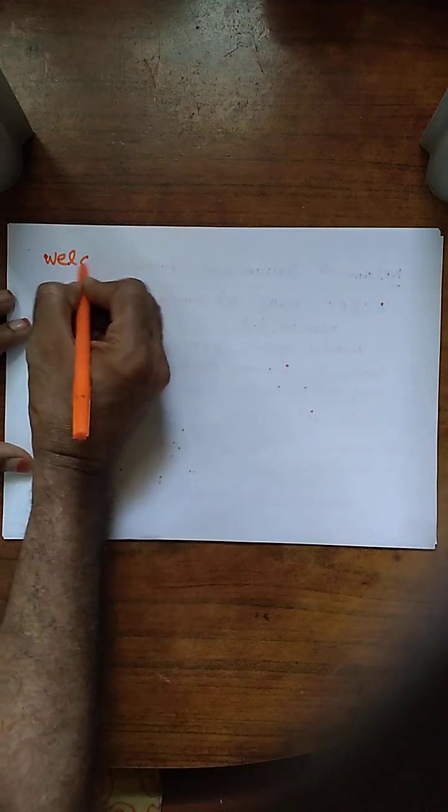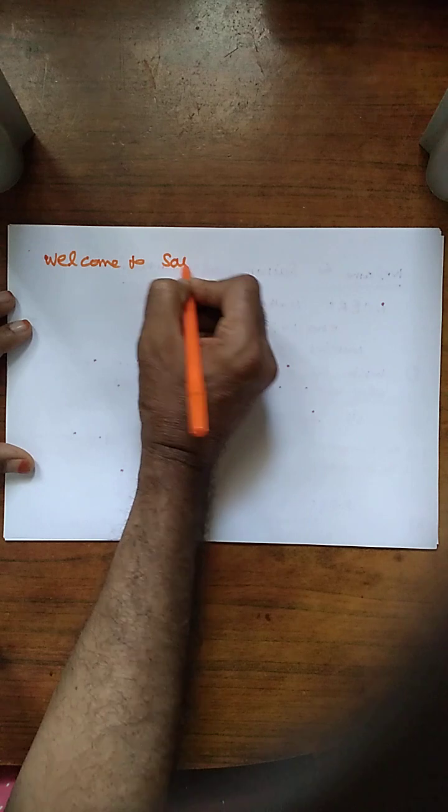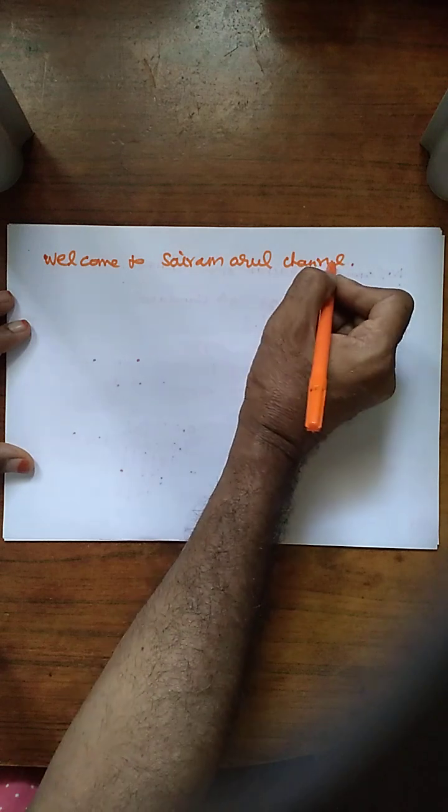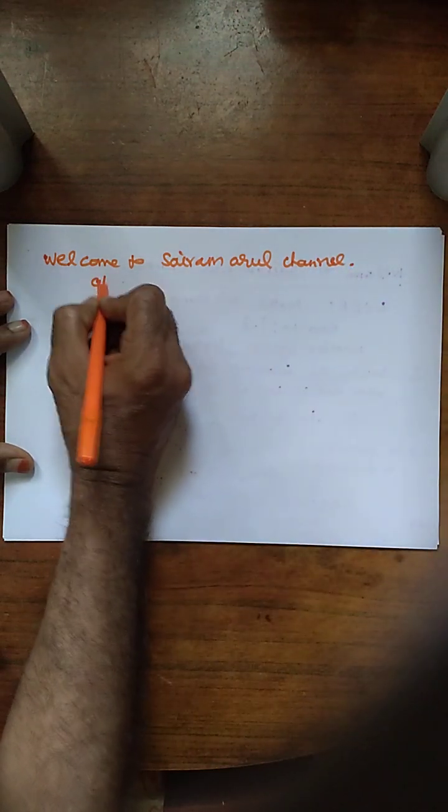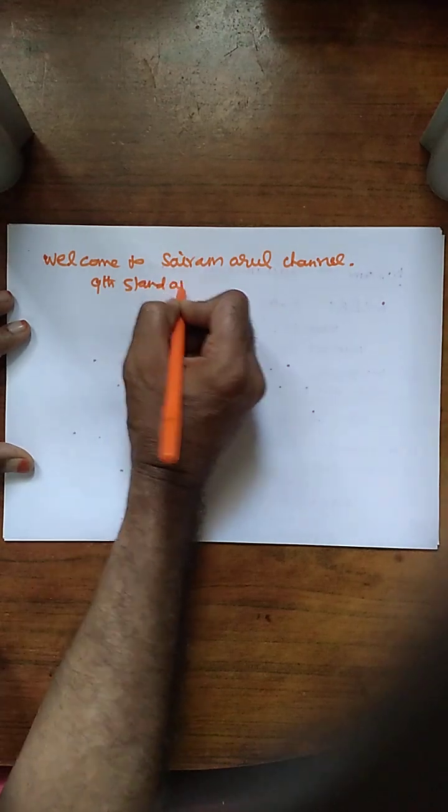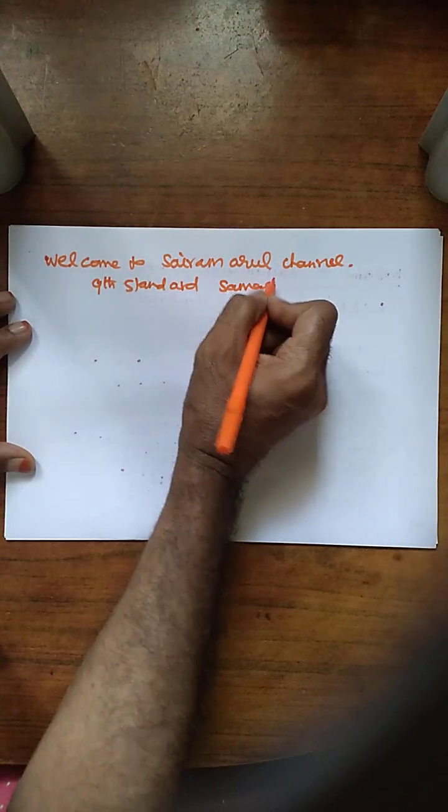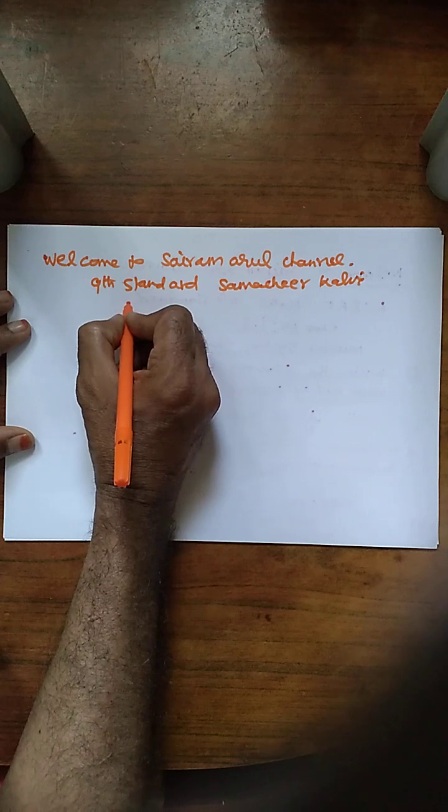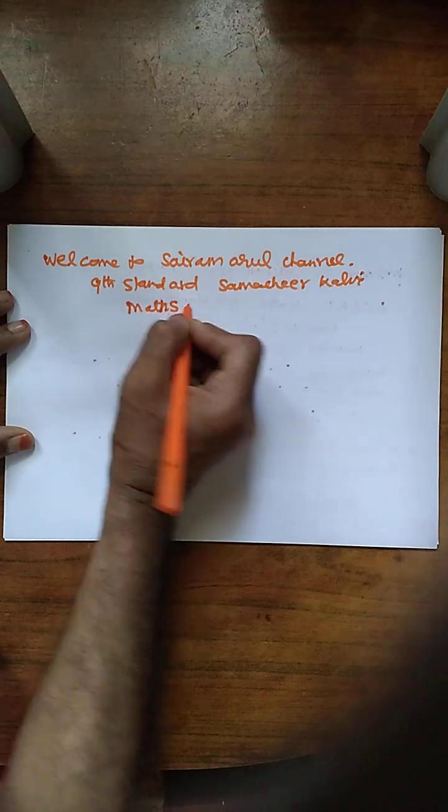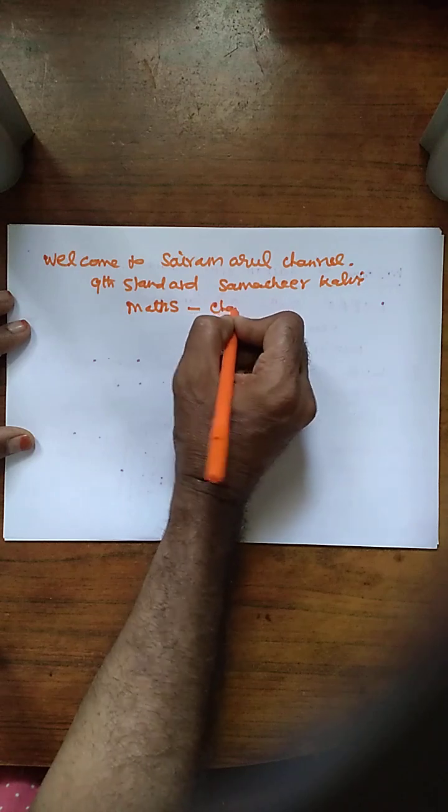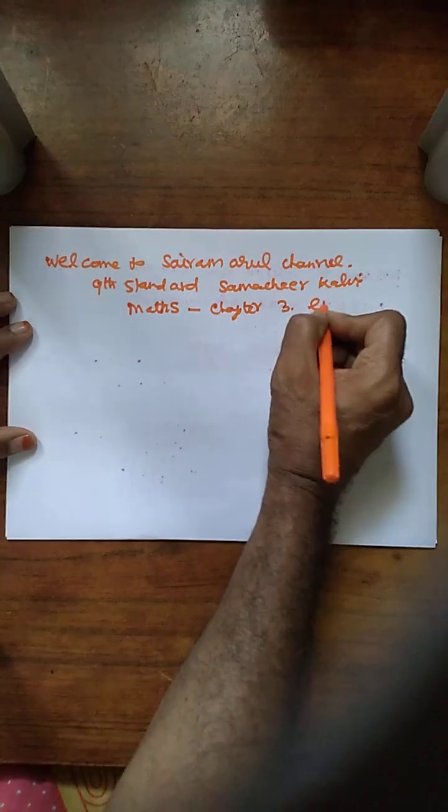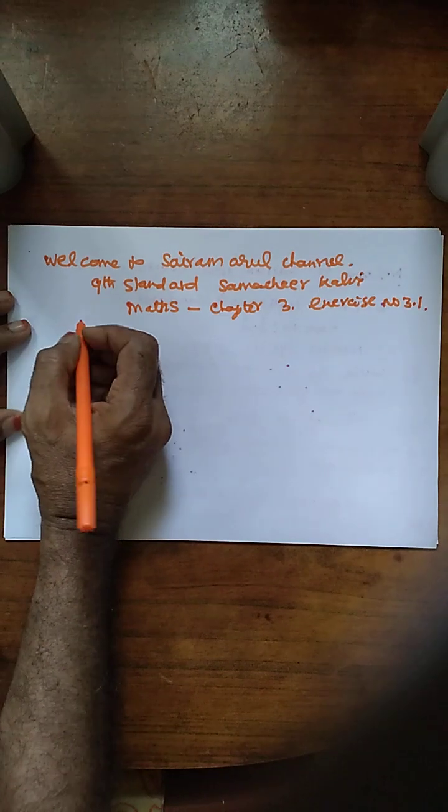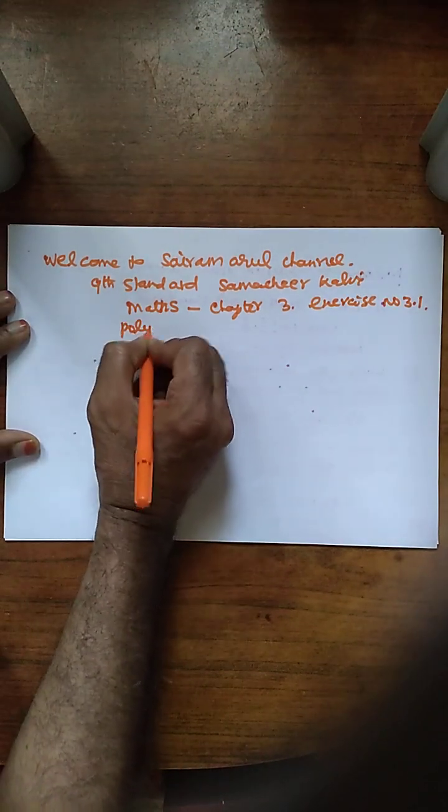Welcome to Sairam Arul channel. Ninth Standard Samachir Kalvi Math Chapter 3, Exercise Number 3.1, Polynomials.